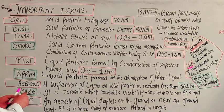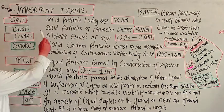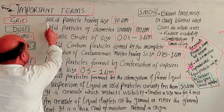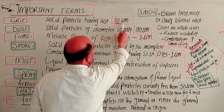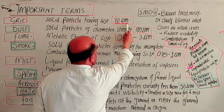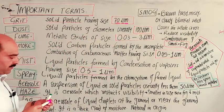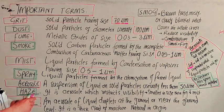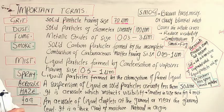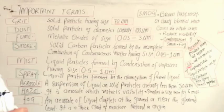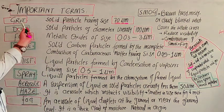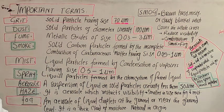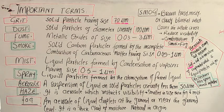What is grit? Actually, grit is a solid particle having size 70 micrometer. These are solid particles suspended in air, which pollute the air as particulate matter.